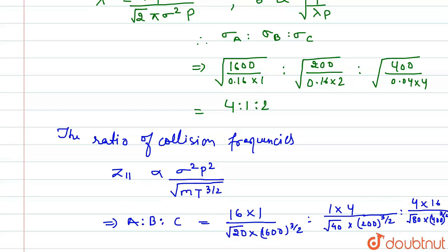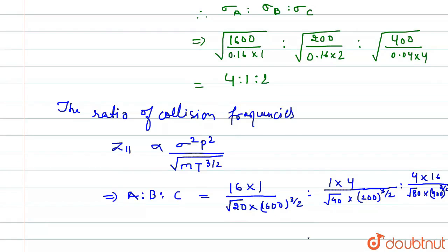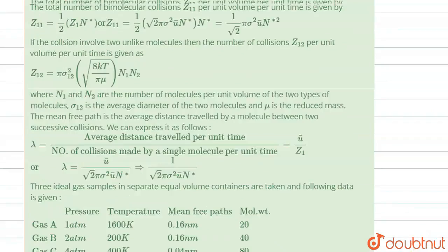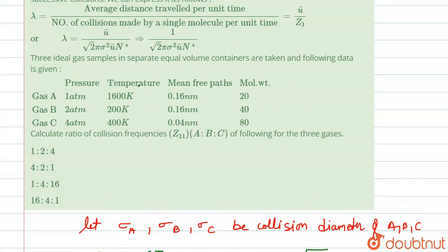So this is our statement. If we simplify this, we have the value is 1:4:16. So from here, the correct option that we have is option C. Thank you.